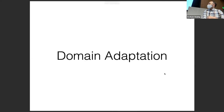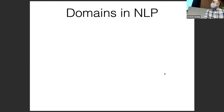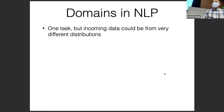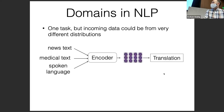The first thing I'm going to talk about is domain adaptation — I should have called the section multi-domain learning. A lot of people have probably heard of this. Basically the idea of a domain in NLP is that you're usually trying to solve a single task, so the type of input and output is the same. However, the data could be from very different distributions. You might do domain adaptation for language modeling, parsing, or translation, where your domains could be things like news text, medical text, or spoken language.